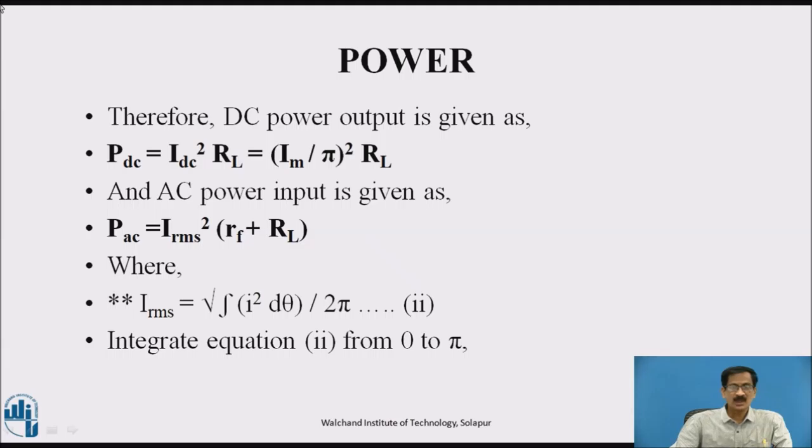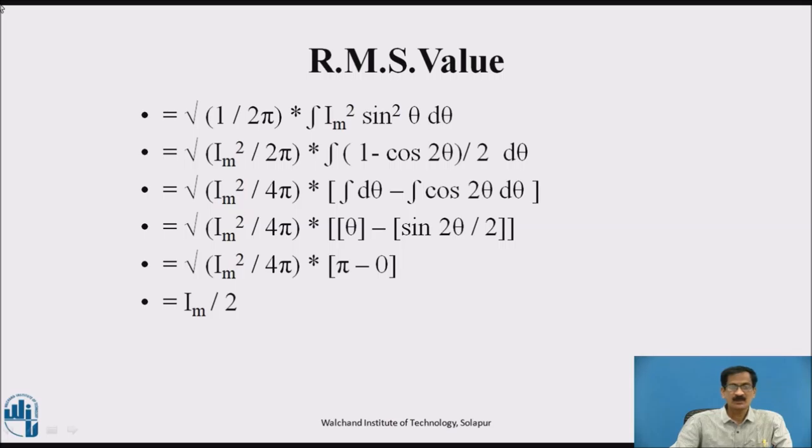Now let us determine the RMS value. RMS is square root of mean of squares. RMS value can be found by square root of integration of i-squared d-theta upon 2π, integrating from 0 to π. i-RMS equals square root of 1 upon 2π integration of im-squared sin-squared theta d-theta, which equals square root of im-squared upon 2π integration of 1 minus cos 2-theta upon 2 d-theta. By solving this integration, we get i-RMS equals im upon 2.